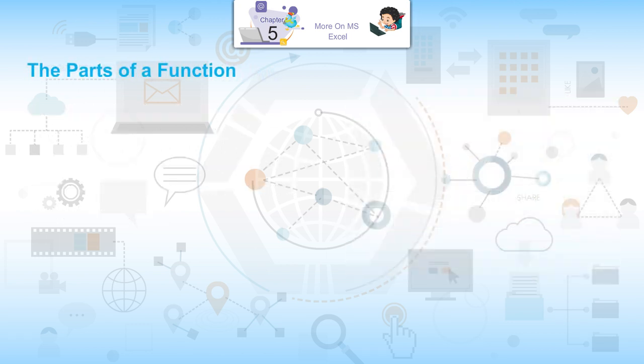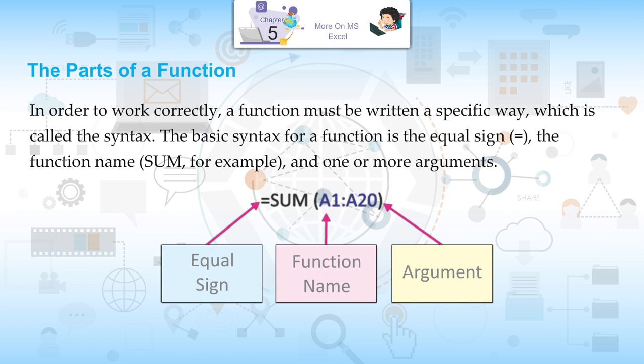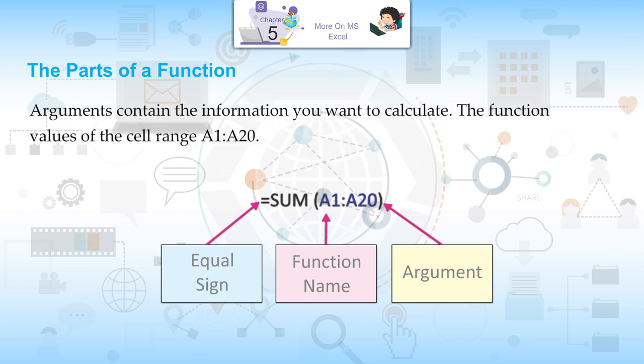The parts of a function: In order to work correctly, a function must be written in a specific way, which is called the syntax. The basic syntax for a function is the equal sign, the function name (for example, SUM), and one or more arguments. Arguments contain the information you want to calculate. The function in the example would add the values of the cell range A1 to A20.